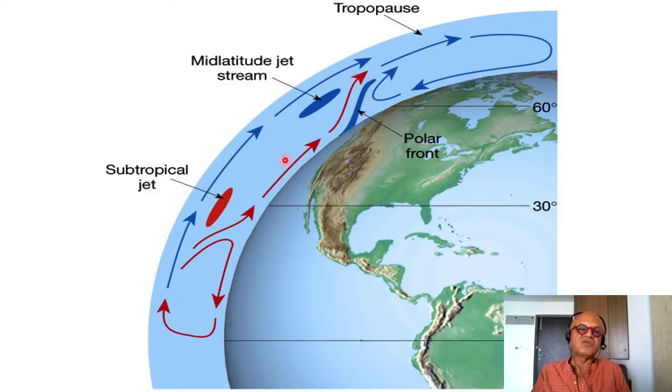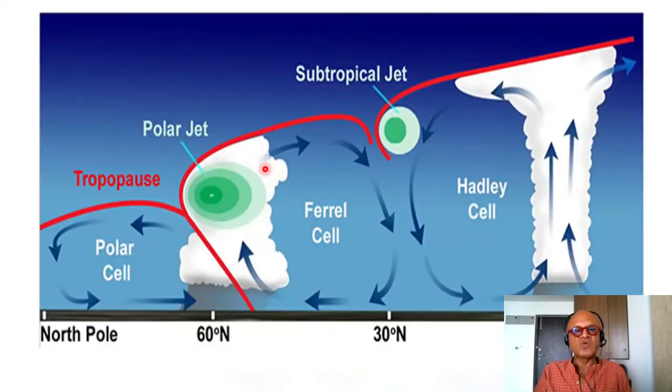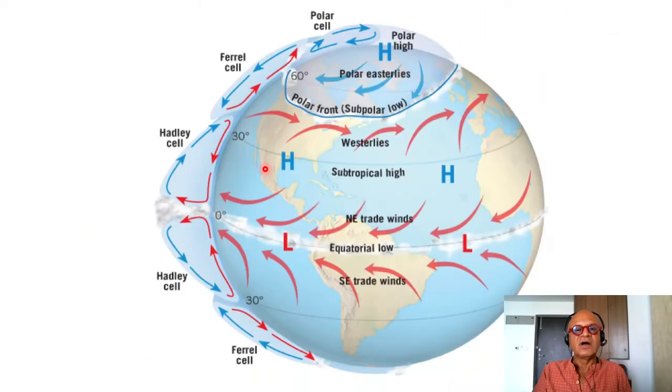And what should amaze you when you look at this is that there are westerlies here at the surface. We're talking about surface winds, right? Westerlies at the surface means what? Okay, you may not have thought about it. It may not be very intuitive, but the planet is rotating from west to east. And we said at 30 north, it's at 1400 kilometers per hour.